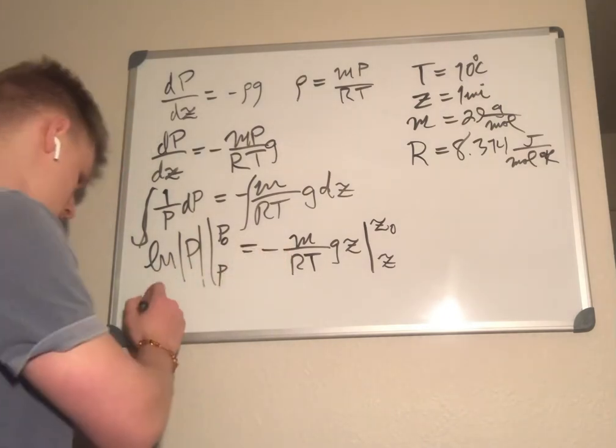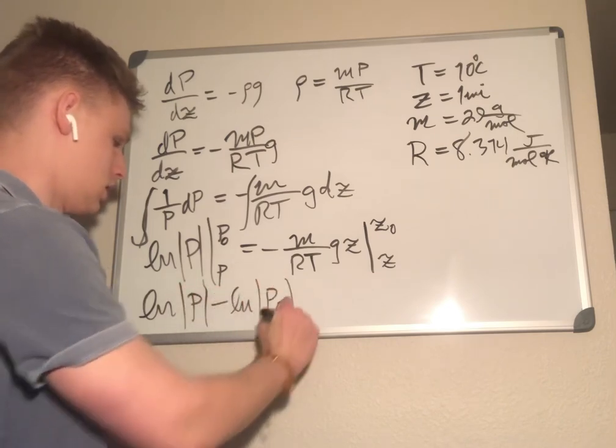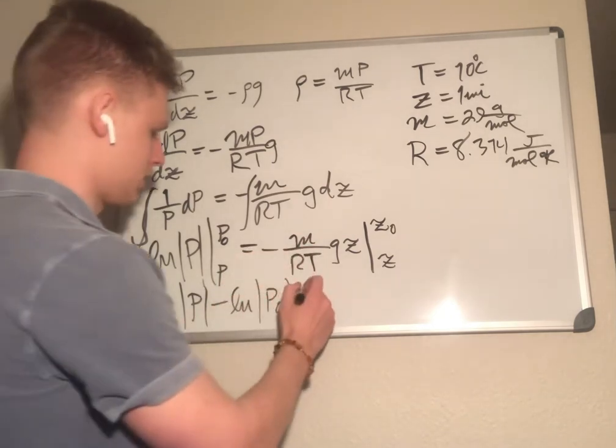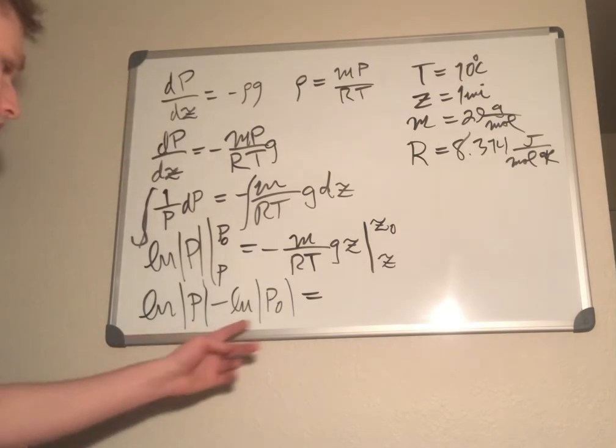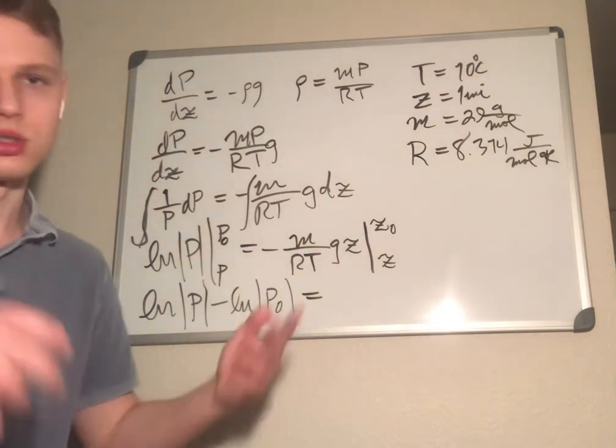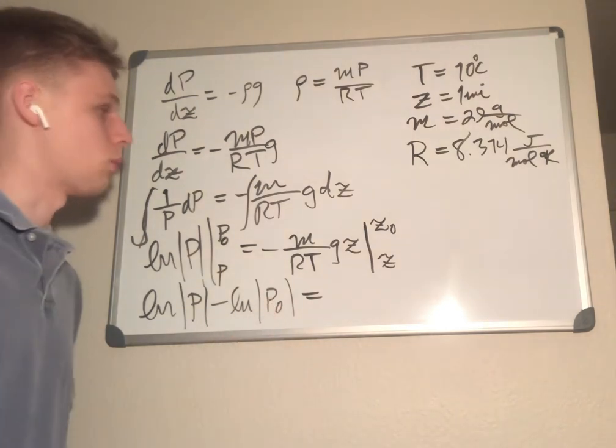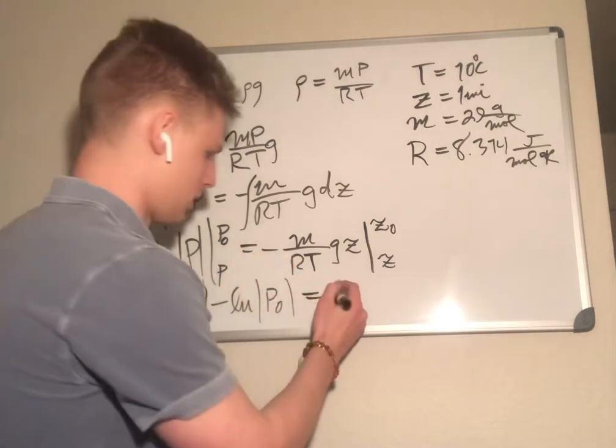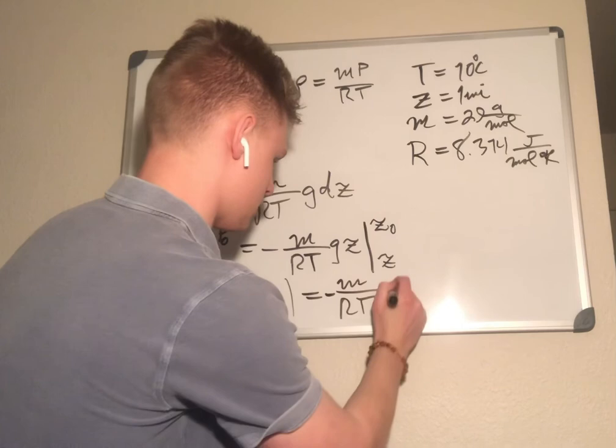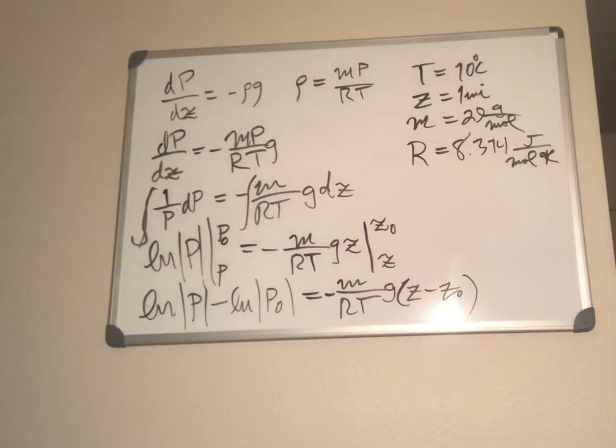I'm going to do ln p minus ln p0, because final minus initial. This pressure right here is the pressure we're solving for, and this is the initial pressure which is at sea level. This equals negative m over rt g times z minus z naught.